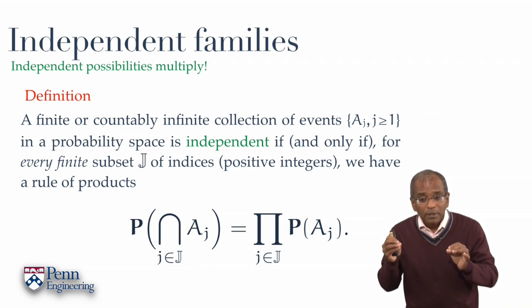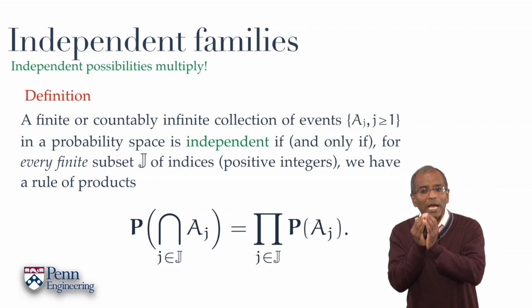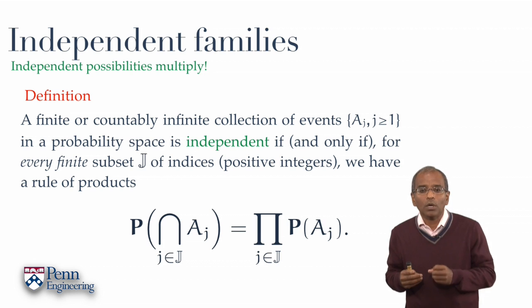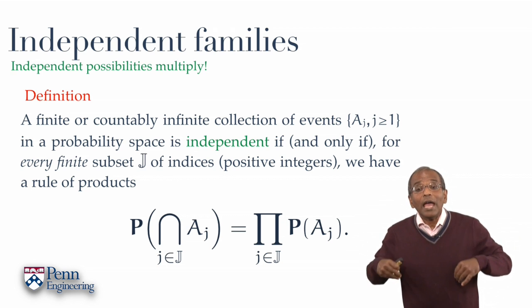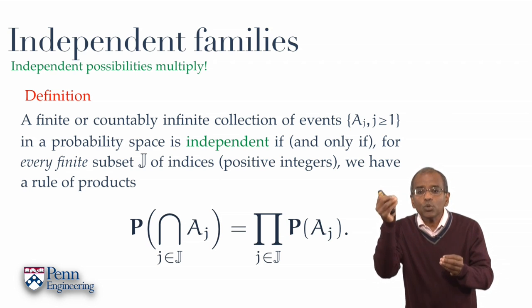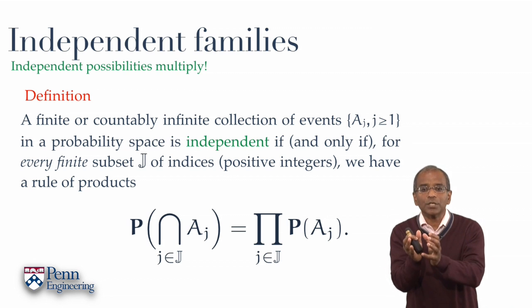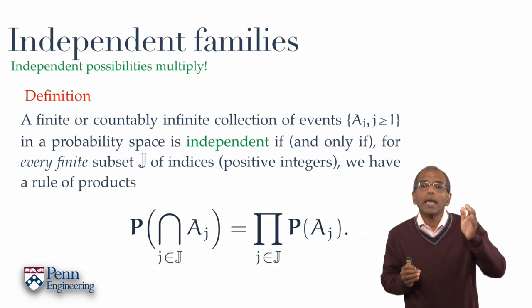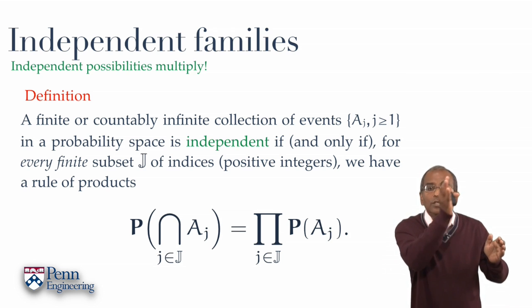if and only if, for every finite subset of integer indices. Let's use blackboard bold J to represent them. So J, blackboard bold, represents a subset of positive integers, for example, 1 and 2, or 3, 7 and 9, or any other collection of integers. For every such collection of blackboard bold J integers, we require that the associated events satisfy a rule of products. The probability of the intersection of those events, specified by the index set blackboard bold J, is given by a product of the probabilities of exactly those events.